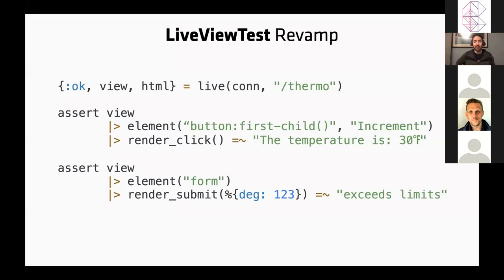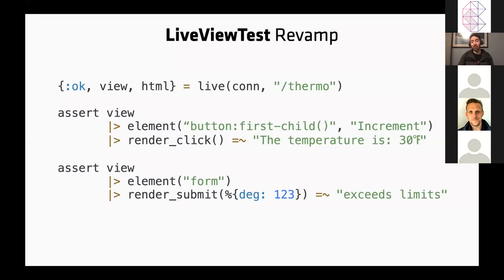What José did was extend the API to a DOM query-selector-based approach, without using a headless browser. You mount a LiveView, pipe to an `element` function with a query selector, find the first button on the page, and expect it to have certain text. You can then simulate a click event and get the rendered result — this sends the click to the server but also guarantees the matching DOM element exists.